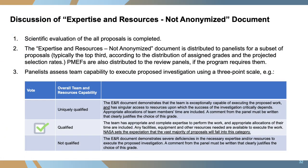Moving on to the expertise and resources, not-anonymized document. The scientific evaluation of all proposals is completed first; then this document is distributed to panelists for a subset — typically the top third — according to assigned grades and projected selection rates. Panelists assess the team's capability to execute the proposed investigation using a three-point scale: uniquely qualified, qualified, or not qualified. We set the expectation that the vast majority of proposals — around 98% — will fall into the 'qualified' category.